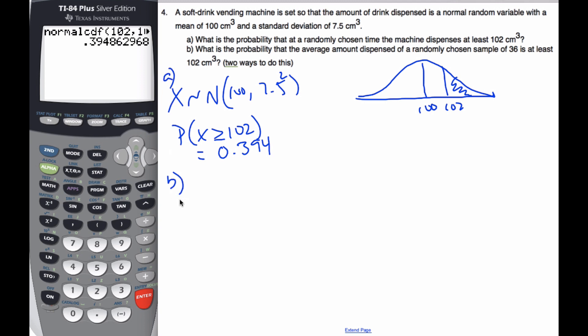Now part B, what's the probability the average amount dispensed of a randomly chosen sample of 36 is at least 102? Well, that means I'm going to go the first machine, and the second machine, and the third machine, and all these machines, all 36 of them.